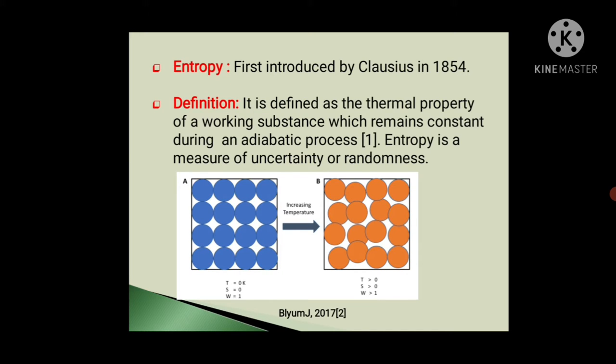So Friends, Entropy was first introduced by Clausius in 1854. Now, Entropy is defined as the thermal property of a working substance which remains constant during an adiabatic process. Entropy is a measure of uncertainty or randomness.